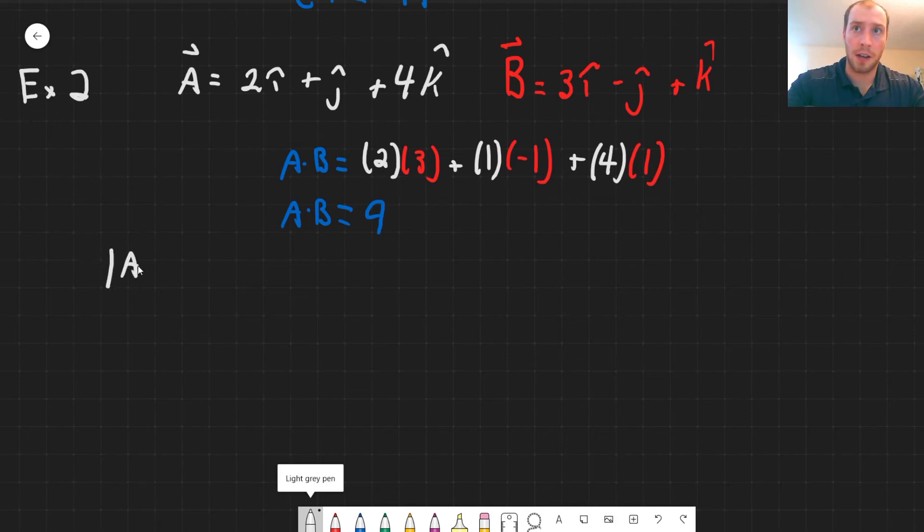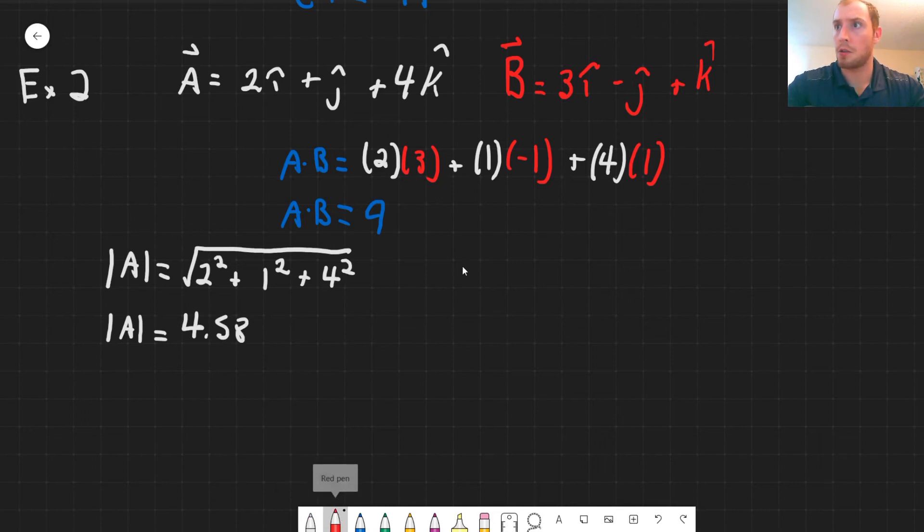Now we can evaluate what the magnitude of our vector A is. This is equal to the Pythagorean's theorem of this 3D vector. So this is 2 squared plus 1 squared plus 4 squared. And this gives us a magnitude equal to 4.58. And now to determine the magnitude of our vector B, we apply the same principle. So we have 3 squared plus negative 1 squared and then plus 1 squared. This gives us a magnitude equal to 5.10.